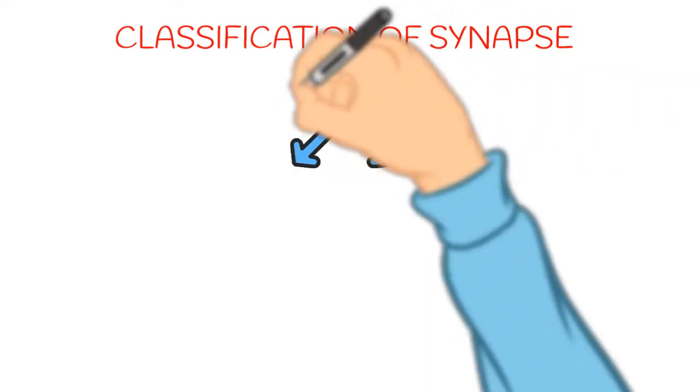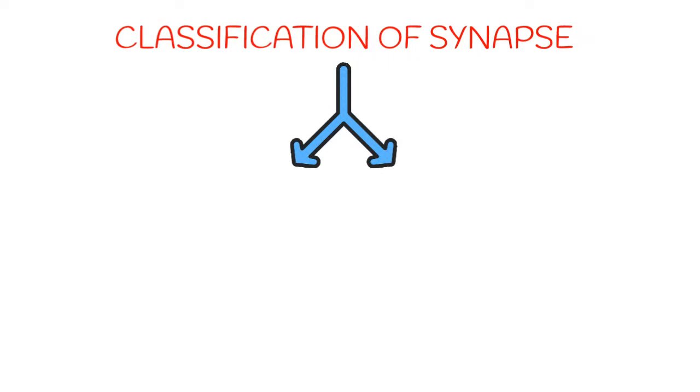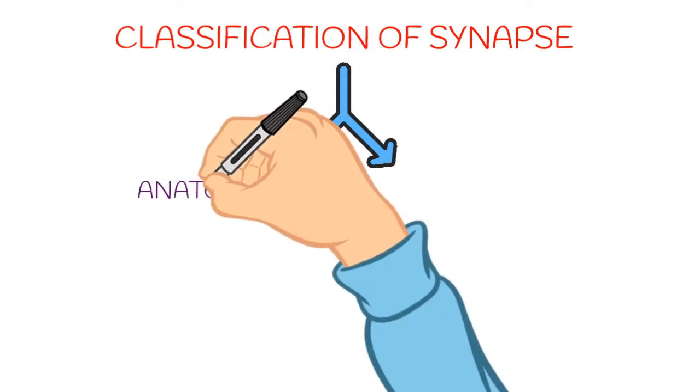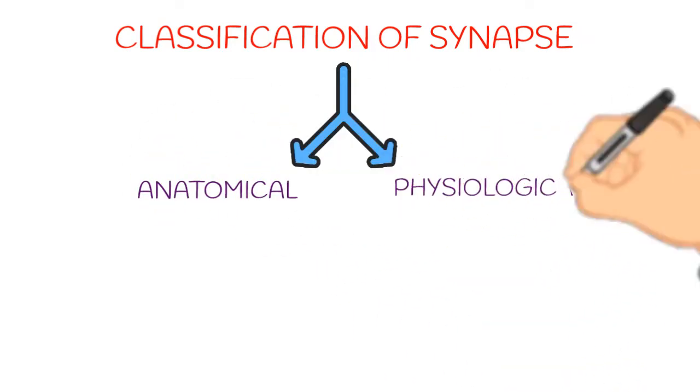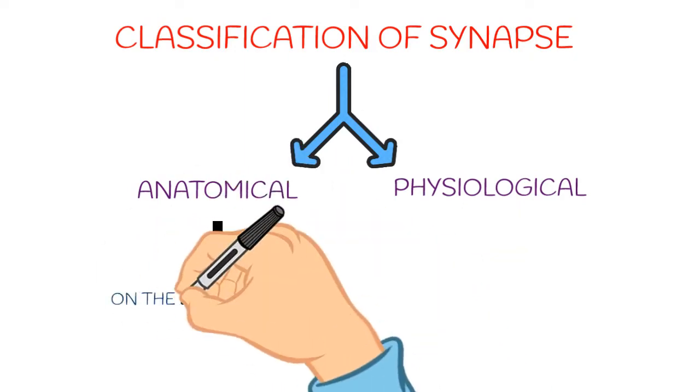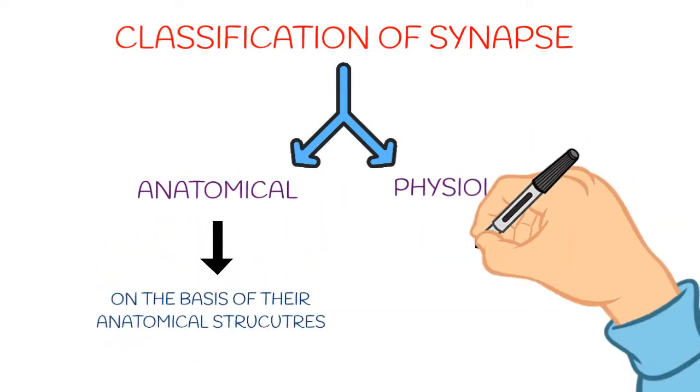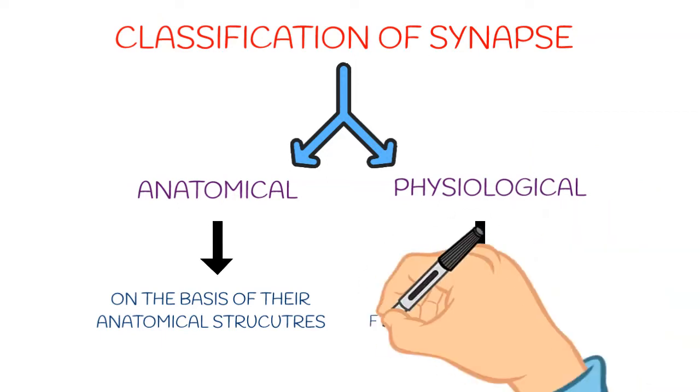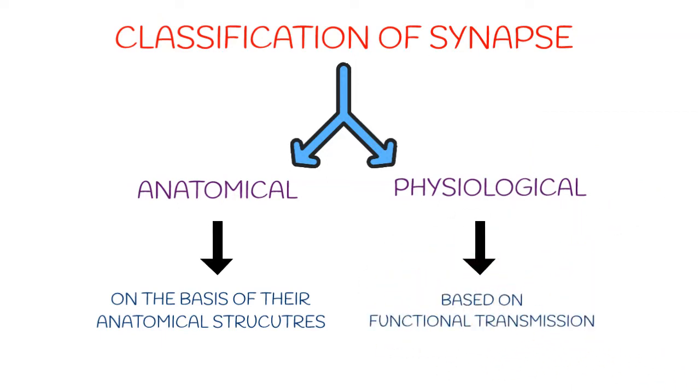Let's see classification of synapse. So synapse can be divided into two categories: anatomical and physiological synapse. Anatomical on the basis of their anatomical structures, and physiological on the basis of functional transmission.